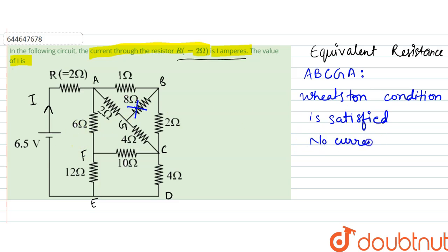No current from 8 ohms. So therefore we can write this 1 and 2 to be in series. So that becomes equal to 3 ohms. And similarly this 2 ohm and 4 ohm would become 6 ohms.